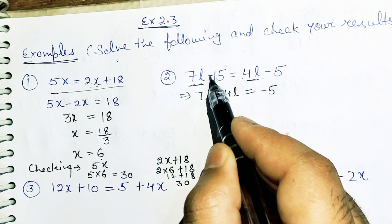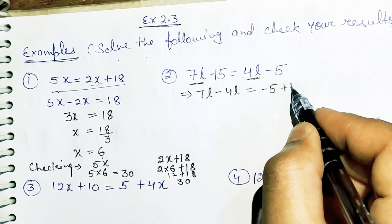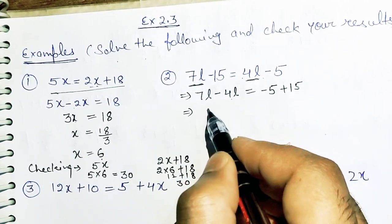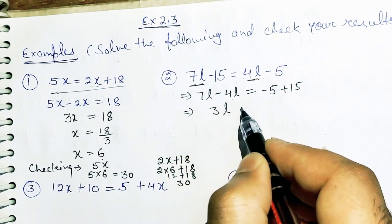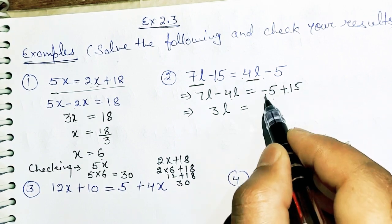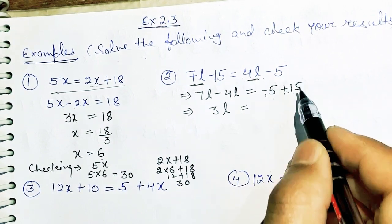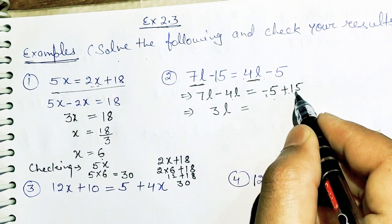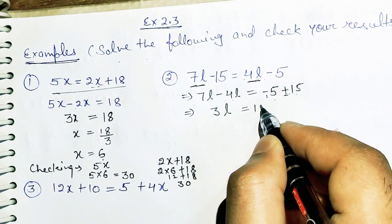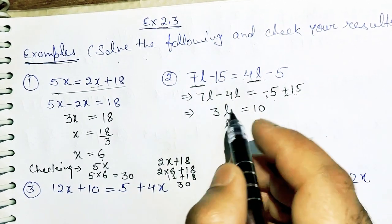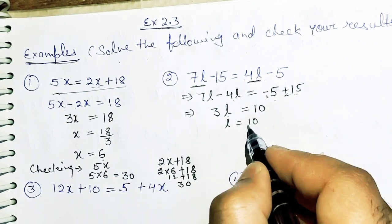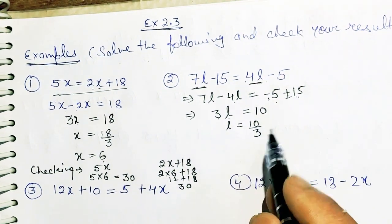Then, what is the sign of 15? It is minus 15, so it will move to the RHS as plus 15. Then 7L minus 4L gives 3L, equal to 15 minus 5. The greater number is 15 and its sign is plus, so the sign of the result is plus. 15 minus 5 equals 10. So 3L equals 10, and since 3 is in multiplication, L equals 10 upon 3.